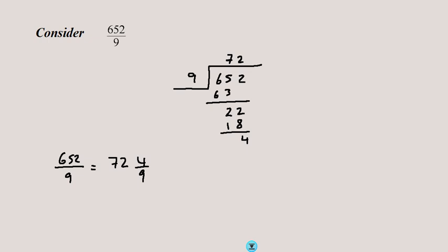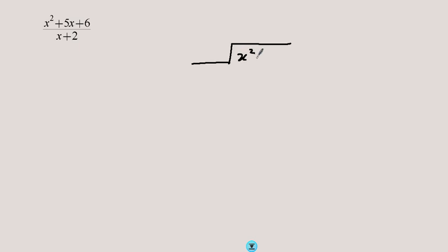This same principle is followed in algebra. Let's divide x squared plus 5x plus 6. We make sure the terms are arranged in descending powers of x — just like in numbers where the most significant digit is on the left. We divide by x plus 2. First, take the most significant term: x squared divided by x gives x, then multiply x times x plus 2.